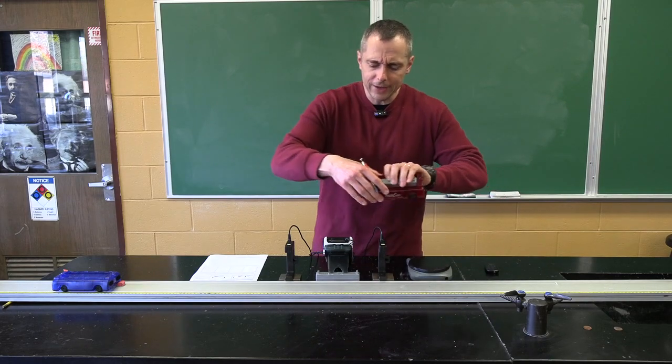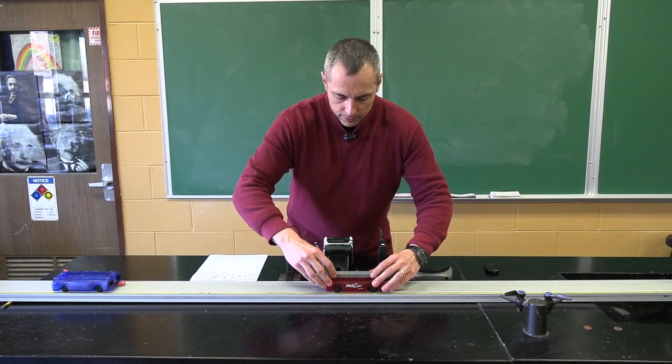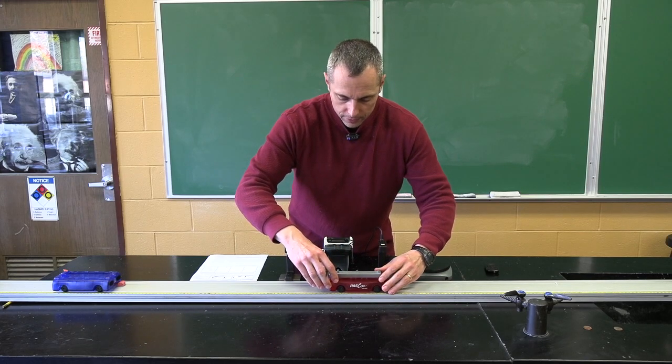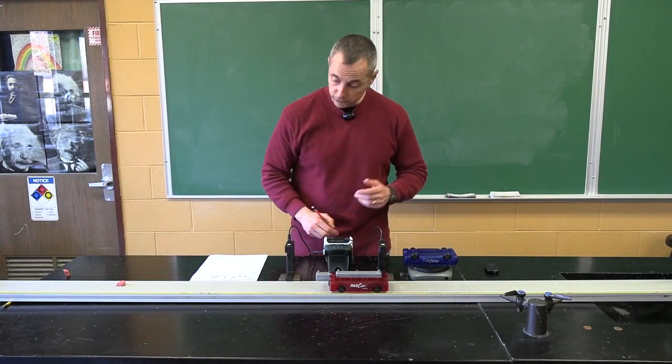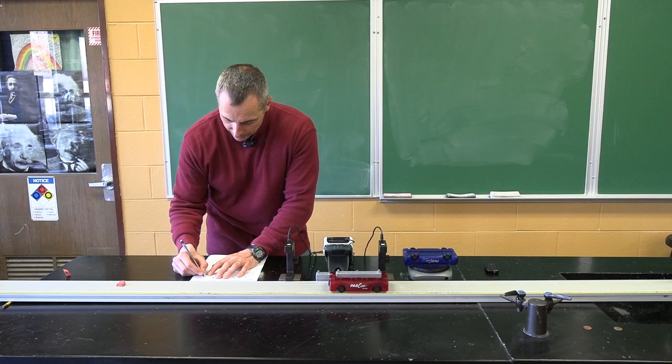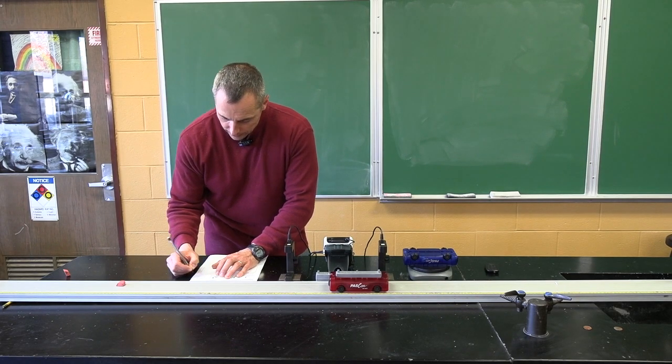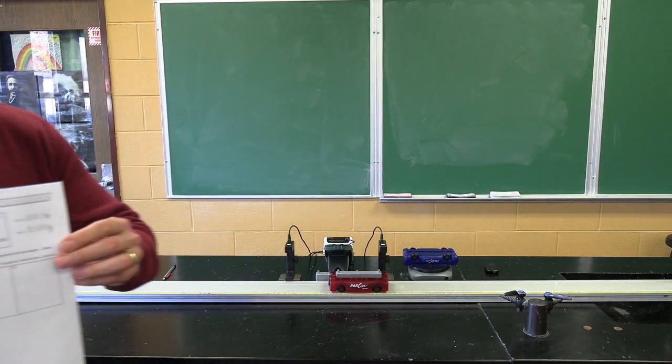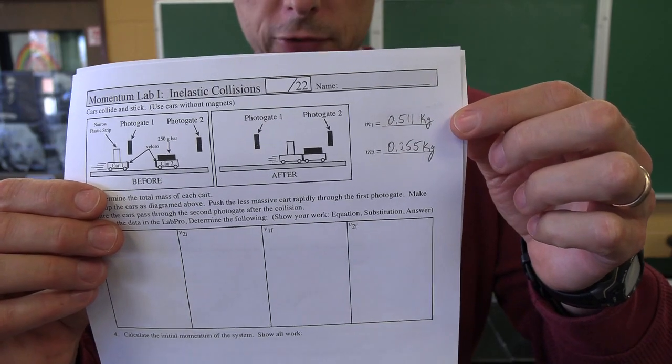So I'll put this back here ready for our experiment and then let me get the other car, put that on the balance, 255, I have to convert to kilograms. Again you're getting your own values and when you do get your own values you're going to put them right here where I put my values, two places for the mass.